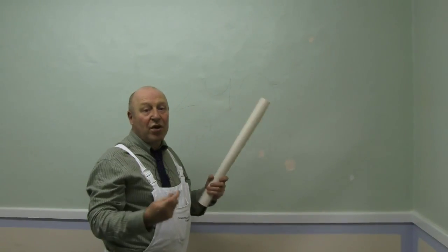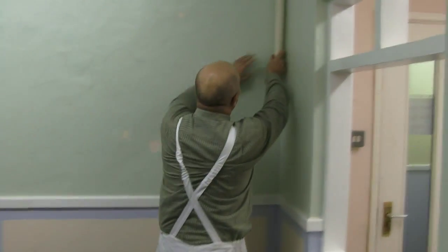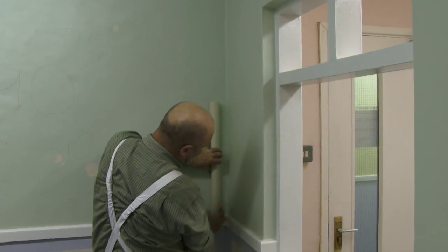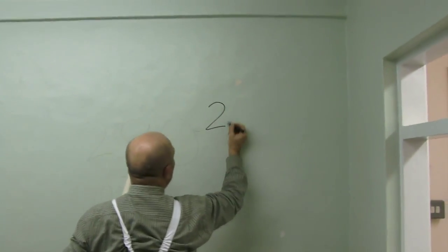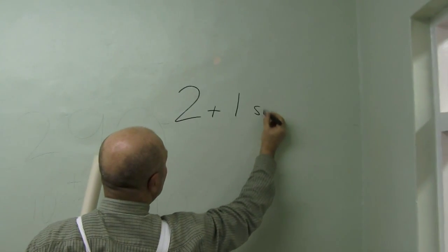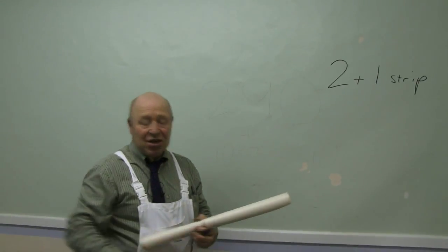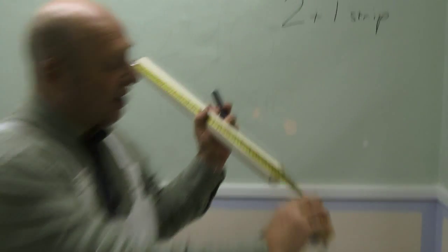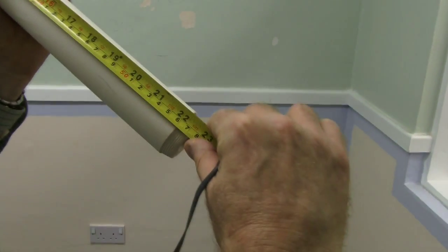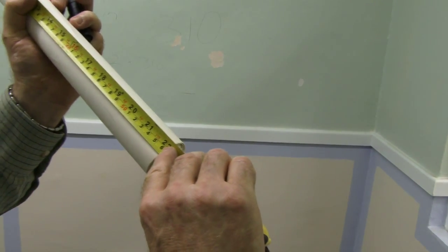We're going to now measure up for what we do need. The first thing we're going to do is take a roll of paper. We're going to put it on the wall. We're going to go one, two and a strip. So I now know that all we need is two plus one strip. You will find that lining paper comes in at 22 inches in old money or 56 centimeters. It's slightly wider than your standard European roll of paper.